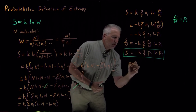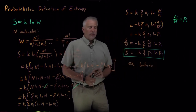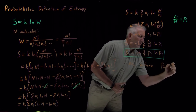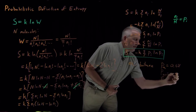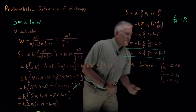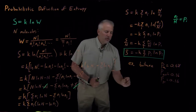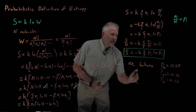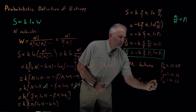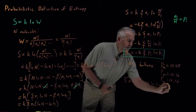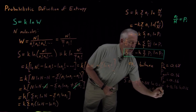For example, returning to butane: at room temperature, the probability of being in the anti-state is 68%, and the probability of being in the gauche-plus and gauche-minus states are both 16%. That's enough information to calculate the entropy per butane molecule — the intensive entropy. According to our new formula, that's minus k times the sum of p log p: minus k times (0.68 log 0.68 + 0.16 log 0.16 + 0.16 log 0.16).